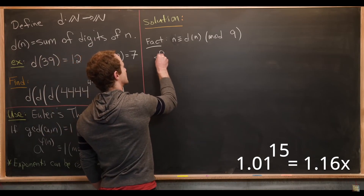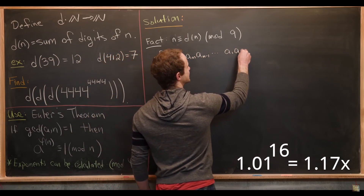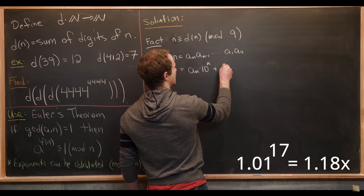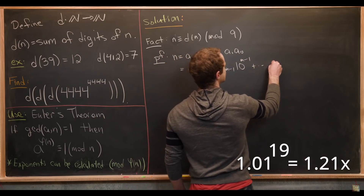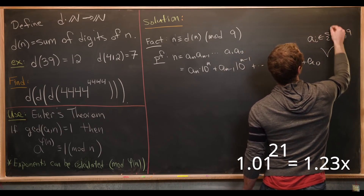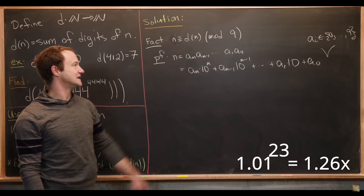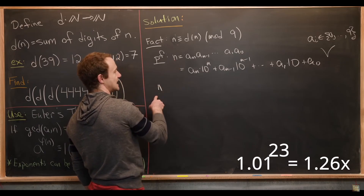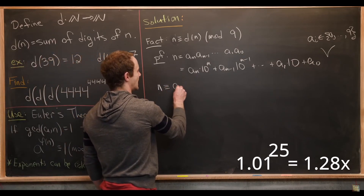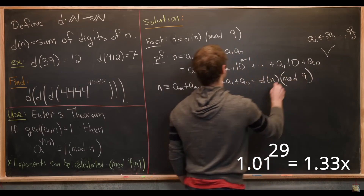That's pretty easy to see, so we'll do a little sketch of a proof. Write n in terms of digits as a_m, a_{m-1}, down to a_1, a_0. Expanding with powers of 10, we get a_m times 10^m plus a_{m-1} times 10^{m-1}, all the way down to a_1 times 10 plus a_0. The a_i's are in the set 0 to 9 since they are the base-10 digits of n. Reducing mod 9, every power of 10 is congruent to 1 mod 9, so this equals a_m plus a_{m-1} plus ... plus a_1 plus a_0, which is exactly d(n) modulo 9.